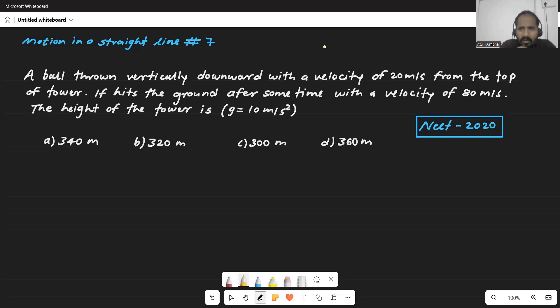A ball thrown vertically downward with a velocity of 20 meters per second from the top of the tower. We are having one tower from which that ball has thrown. If it hits the ground after some time with velocity of 80 meters per second, they are asking the height of the tower.